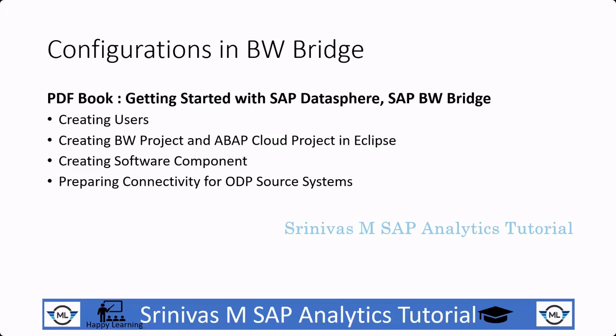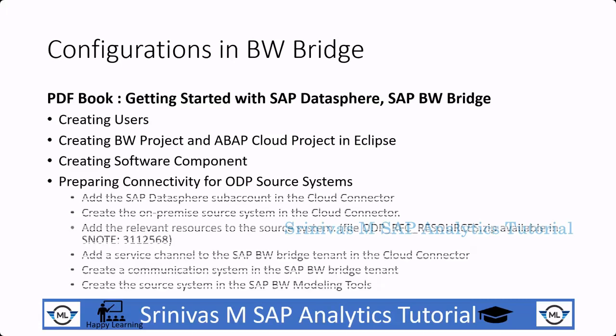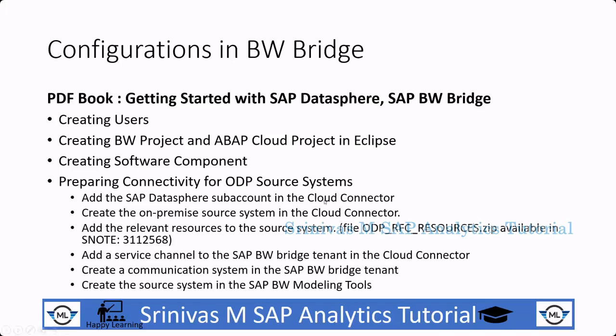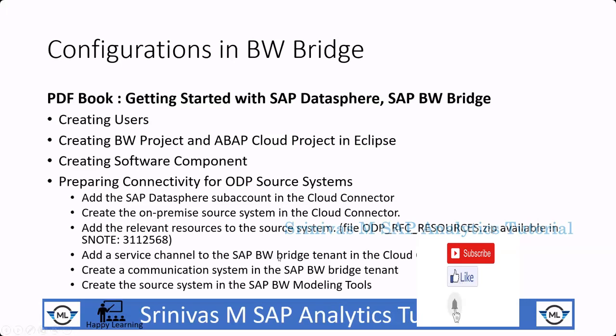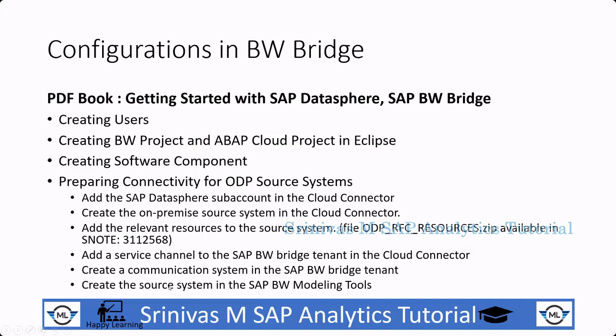As mentioned in our previous video, in Eclipse, to get data from on-premise source systems we need to create source system connections. To do the source system connections we have to perform certain steps: adding the SAP subaccount in Cloud Connector, some steps at the Cloud Connector BTP level, some steps in the BWBridge cockpit, and a few things we need to configure at the on-premise source system level to create a successful source system connection.